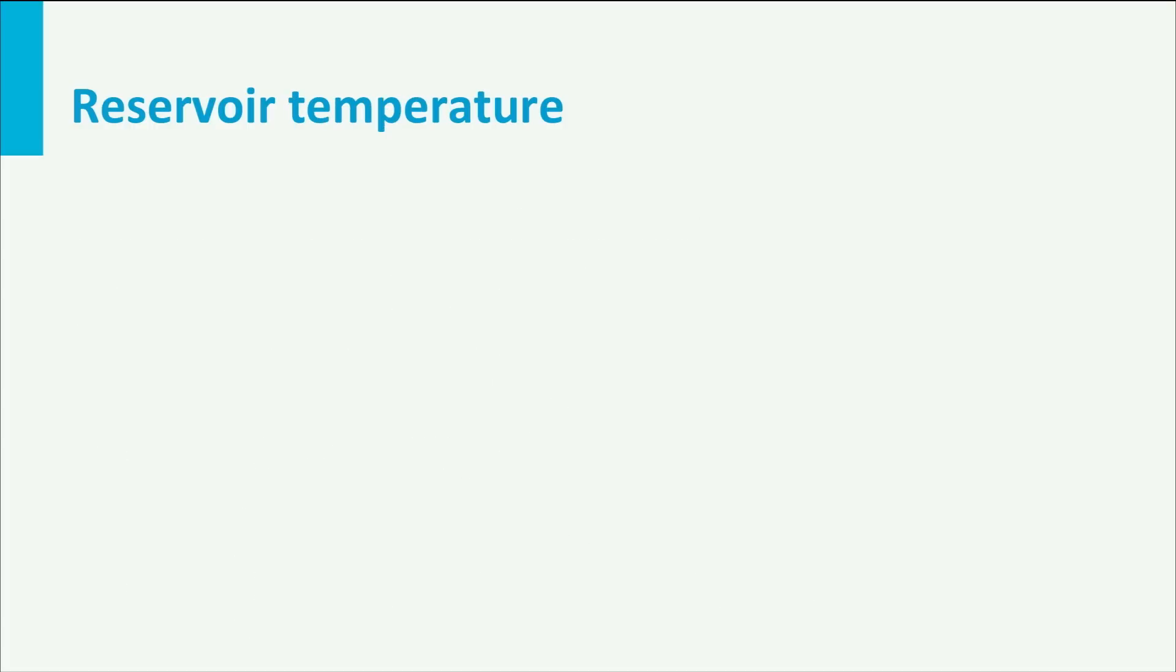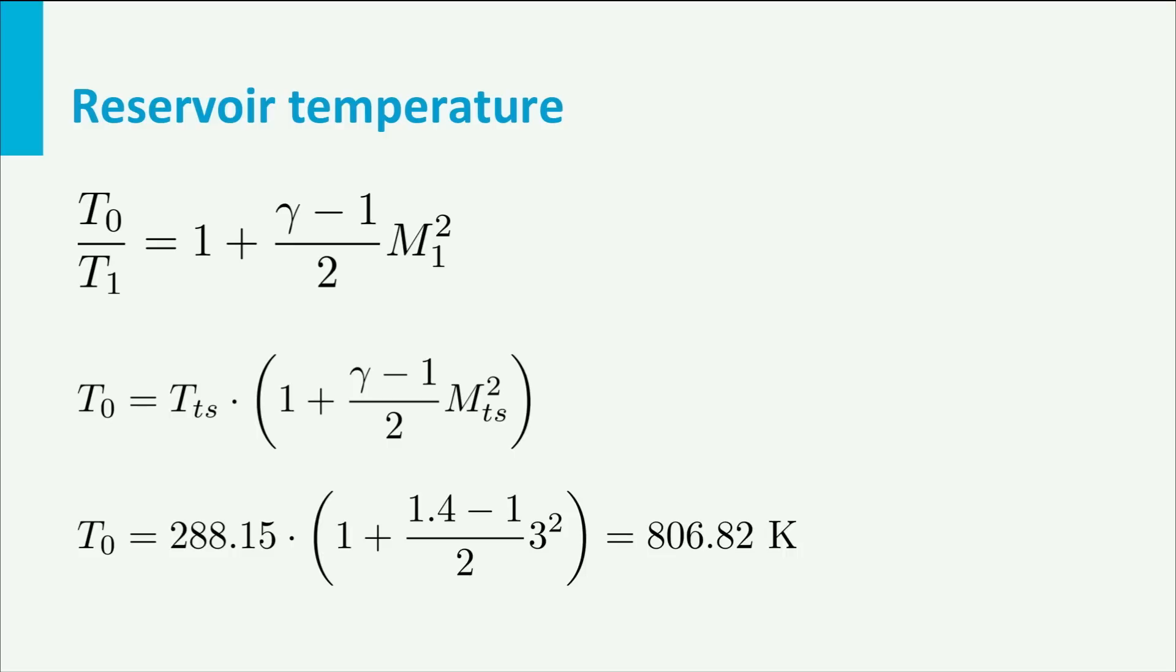Now item B: what should be the temperature in the reservoir? This is easy. If we use the second form of the isentropic relations relating temperature and Mach number, we find T0 equals TTS times (1 + (gamma - 1)/2 × M²). M is 3 and under standard sea level conditions TTS is 288.15 K. This gives a T0 of 806.82 K.